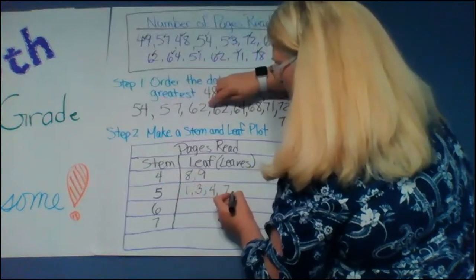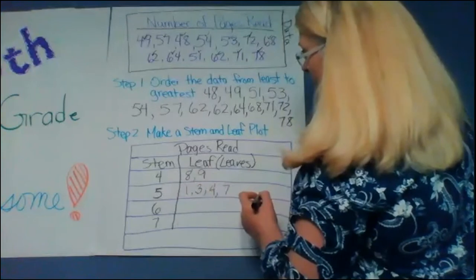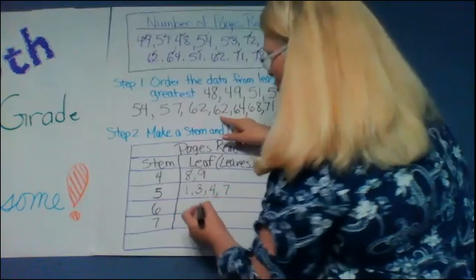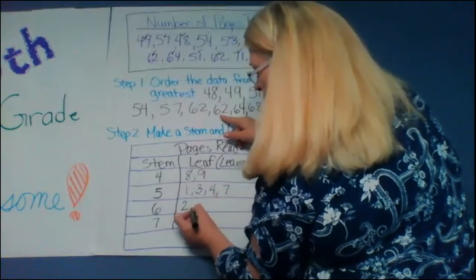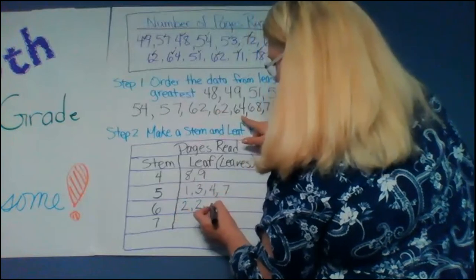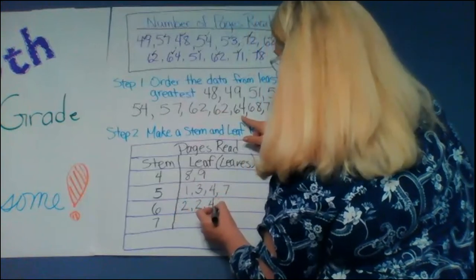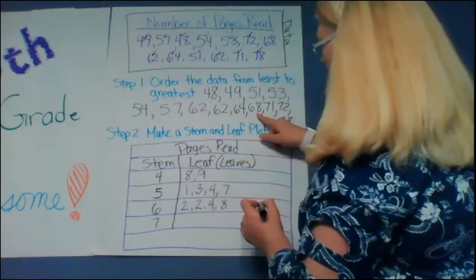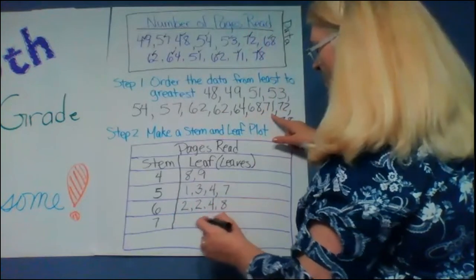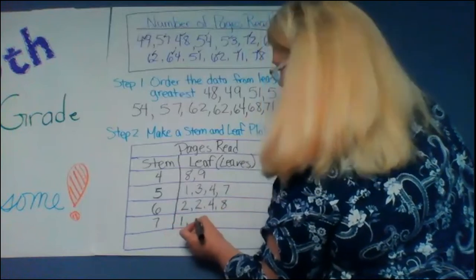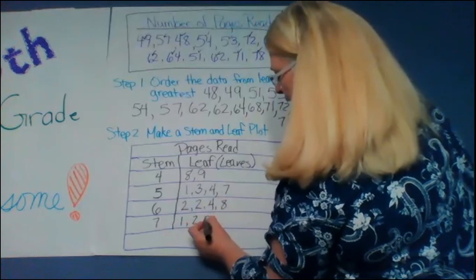Then I get to the sixties and I have two twos. So I have to write them both. A two and another two. Four and eight. And then I'm in my 70. So I have a one, a two and eight.